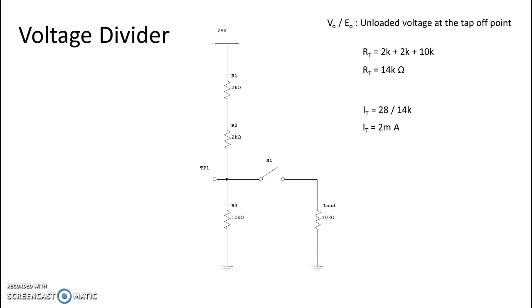In this case, because our tap off point is right above R3, we are reading across R3. So to get the voltage there, we are looking for the voltage of R3. To do that, we would use Ohm's Law and we would take the ohmic value of R3, which is 10,000 ohms, multiply it by total current, which is 2 milliamps. And we see that we have 20 volts at our tap off point when the circuit is unloaded. So EO or VO would be 20 volts.